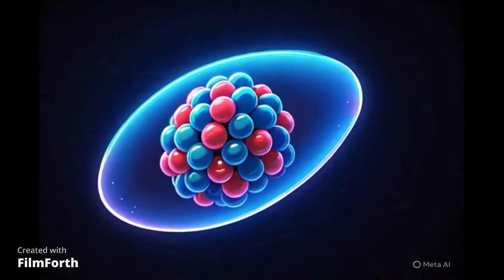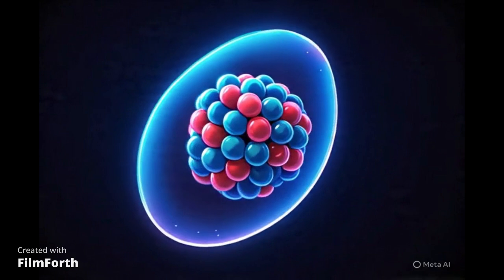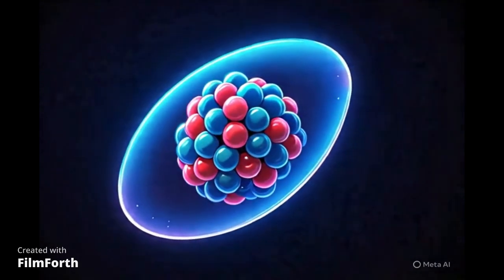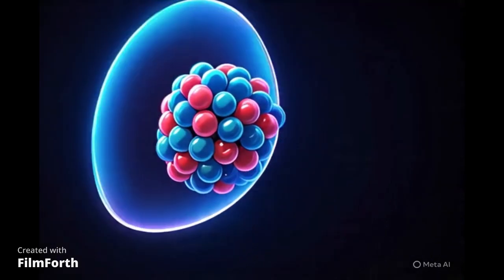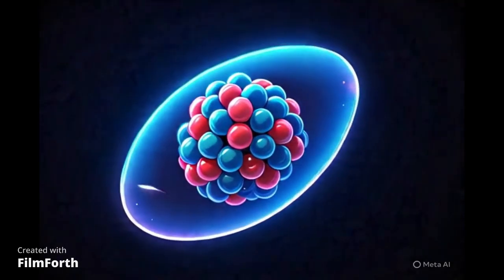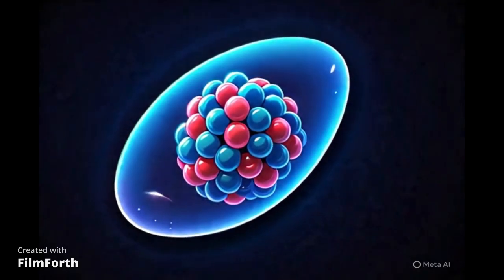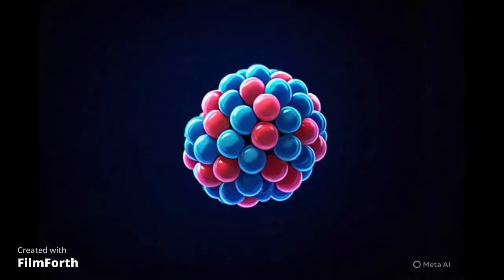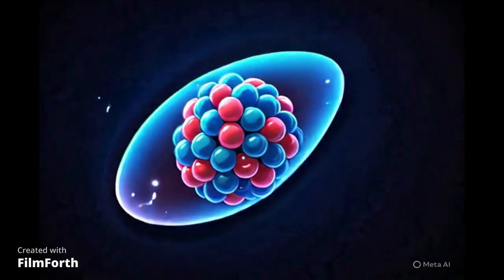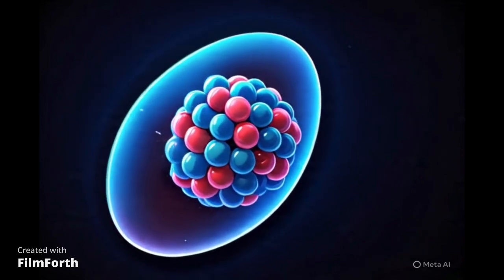But as we explore further, we discover that the nuclear world isn't always perfectly round. Many nuclei take on slightly different forms, and one of the most common is the ellipsoid. Picture taking that perfect sphere and gently stretching it out along one axis, like squeezing a ball to make it longer. This elongated shape, like a rugby ball, is what we call prolate.